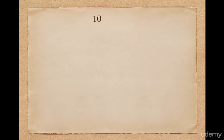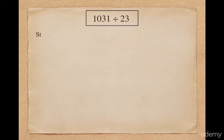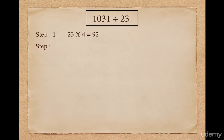Let's take our first example. Suppose I want to divide 1031 by 23. 23 does not meet any criteria where we can apply Nikhilam or Parvartiya method. So as a solution, multiply 23 with 4 and it gives me 92. 92 is definitely closer and smaller than a power of 10, so we can apply Nikhilam formula now. As a next step, split 1031 into quotient and remainder.